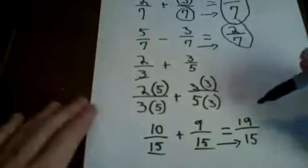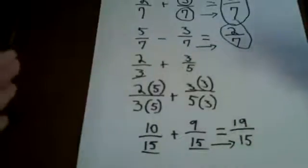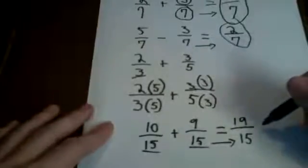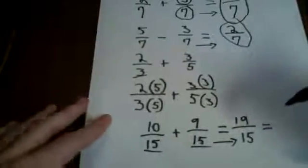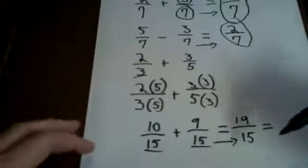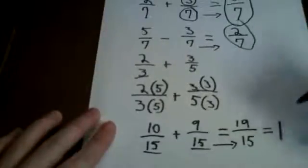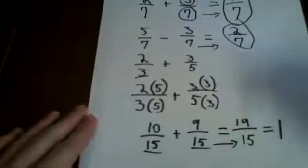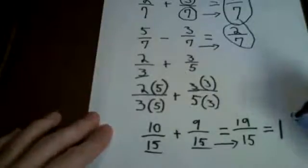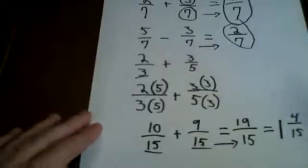And technically, that is actually a correct answer. But depending on the teacher, you might lose points for just leaving it as 19 15ths. So to make that as a mixed number, you would say, how many times can 15 go into 19 without going over? And the answer is one time. So you would take a 1, and then what is left over when you try to take 15 into 19? And that is 4. So it's going to be 1 and 4 15ths. And that would be your answer as a mixed number.